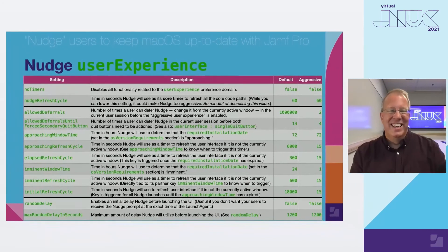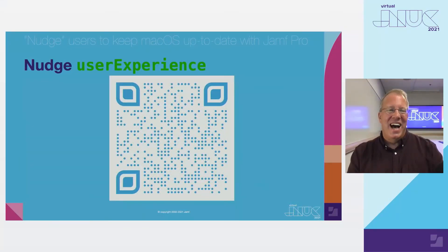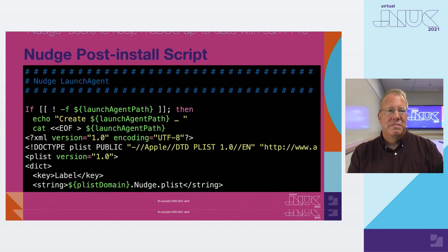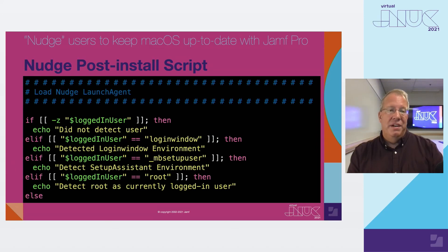That's enough to make your head spin. Again, this slide is not a substitute for reading and understanding the official Nudge documentation available on the wiki. If you have questions about these settings, review the wiki and experiment, or head over to the Nudge channel on the Mac Admin Slack. The Nudge post-install script also creates a launch agent which controls how frequently Nudge launches. Once you've determined the desired frequency, you shouldn't need to modify this portion of the code. This portion of the script is a complete lift from Eric's work to actually load the launch agent.